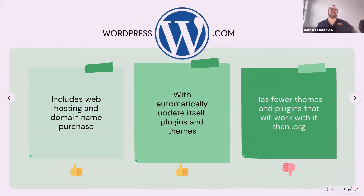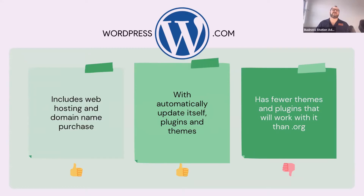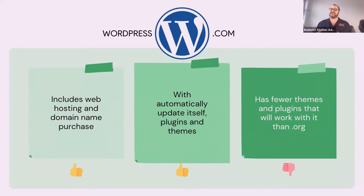WordPress.com is a slightly different version — it's like the safe version for beginners. It includes the web hosting and can include your domain name, all in one neat package. It has a free level with very limited features, but starts at about $5 per month including hosting and domain name. One of the great advantages is it can automatically update itself — the WordPress software and most plugins and themes are also updated automatically. However, it has fewer themes and fewer plugins available than the .org version.